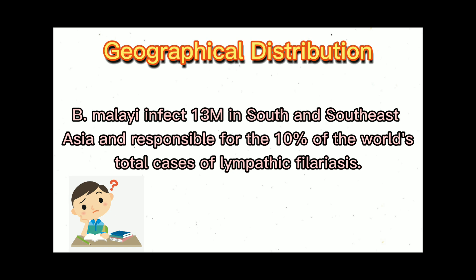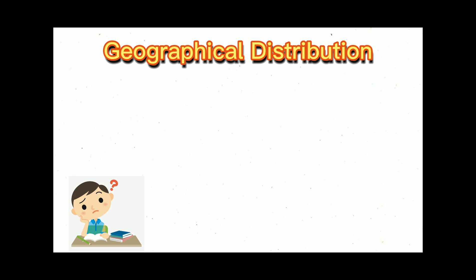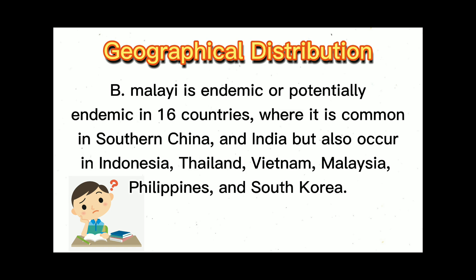Brugia malayi infects 30 million people in South and Southeast Asia and is responsible for 10% of the world's total cases of lymphatic filariasis. It is endemic or potentially endemic in 16 countries, where it is common in Southern China and India, but also in Indonesia, Thailand, Vietnam, Malaysia, Philippines, and South Korea.